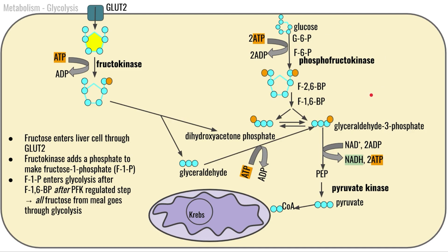Here I'm just showing you a little bit more detail: when fructose gets split apart into dihydroxyacetone phosphate and glyceraldehyde, that glyceraldehyde can then have a phosphate added to it in order to become glyceraldehyde-3-phosphate, and just continue down the rest of glycolysis the same way that glucose did.